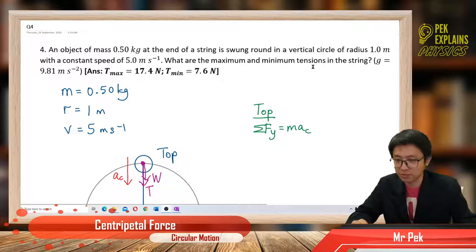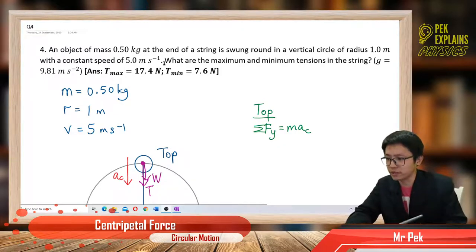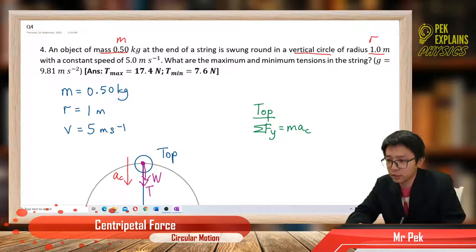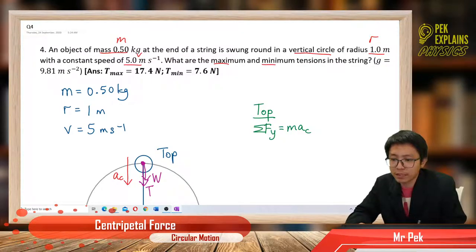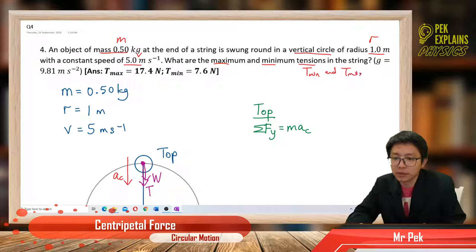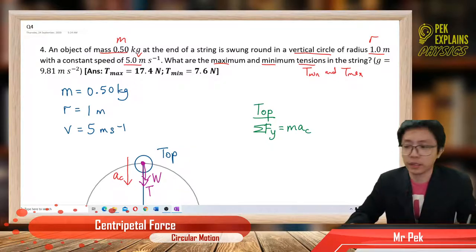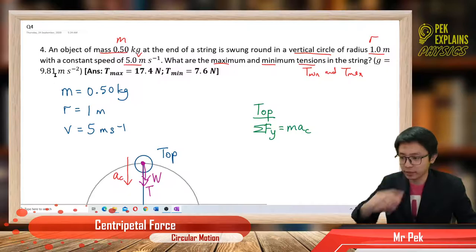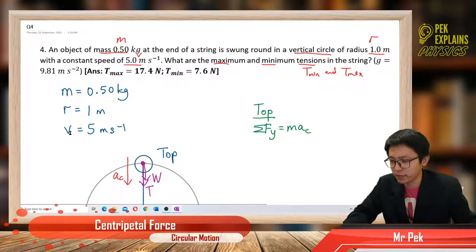In the string we have different tensions. So what information is given? We have the mass. It's a vertical circle and we have a radius r, a radius of the circle. We have the speed, we have v. These are all important information. We want to find the maximum and minimum tension in the string — two values we need to find. And the g value, we just use 9.81. So the values given are mass, radius, and velocity.